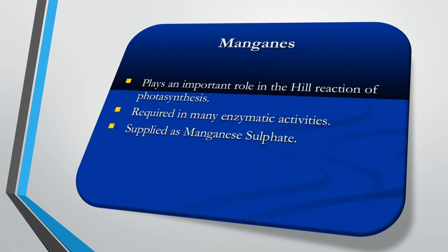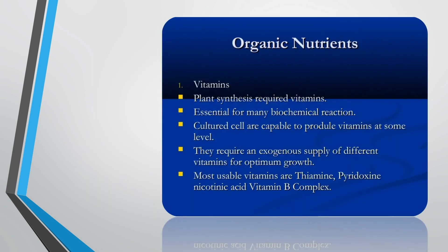Manganese plays an important role in the light reactions of photosynthesis and is required in many enzymatic activities. It is supplied as manganese sulfate. Let us see organic nutrients: vitamins. Plants synthesize required vitamins essential for many biochemical reactions. Cultured cells are capable of producing vitamins at some level.